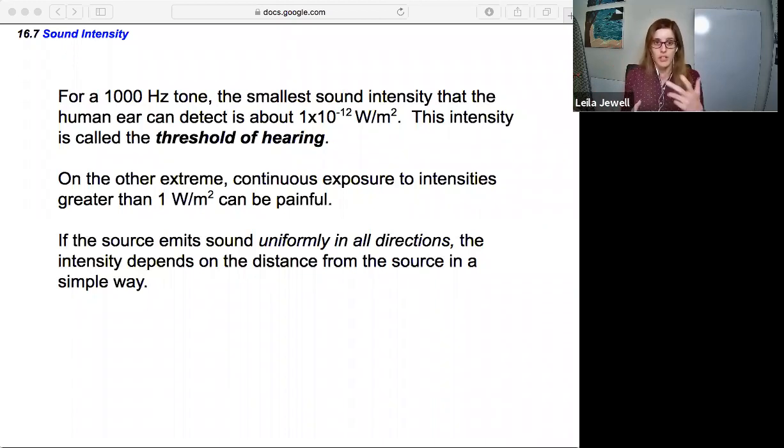Now a couple of notes. For a 1000 Hz tone, the very smallest sound intensity that the human ear can detect is about 1 times 10 to the minus 12 watts per square meter. This intensity is called the threshold of hearing. This is the tiniest sound you could possibly imagine, and this is later referred to as I₀, our threshold of hearing - the lowest intensity of sound possible.